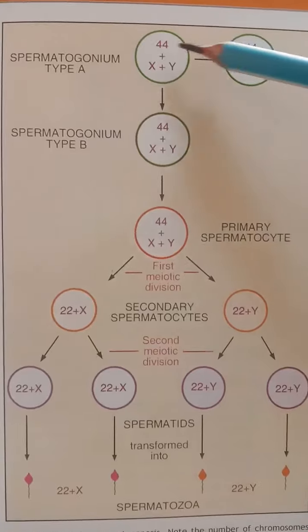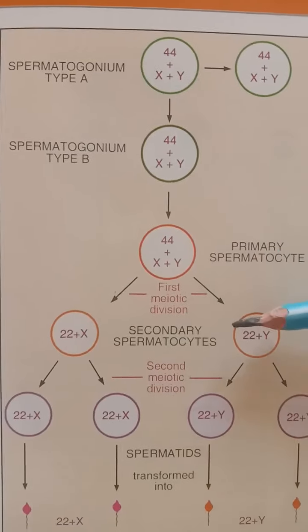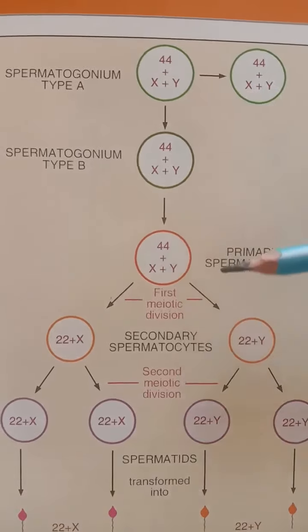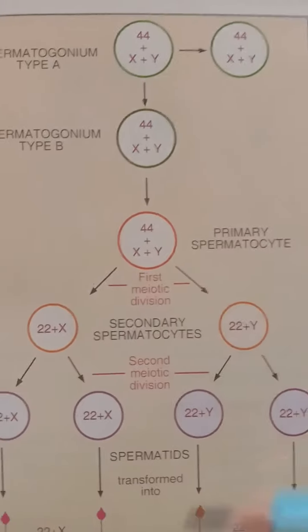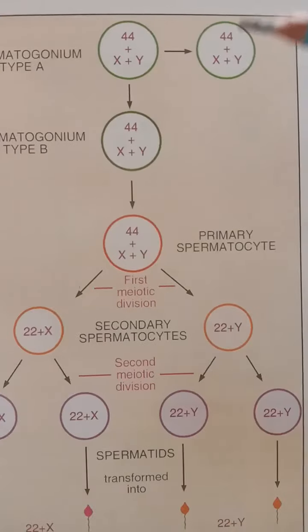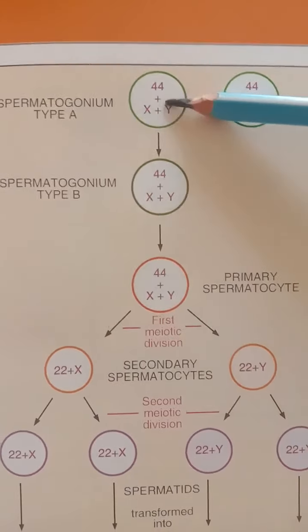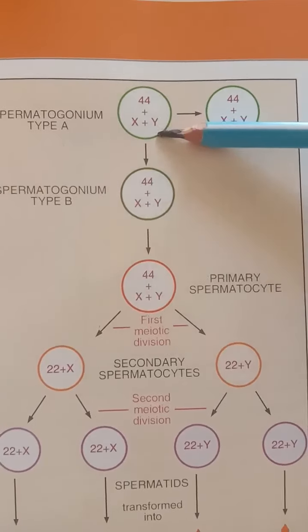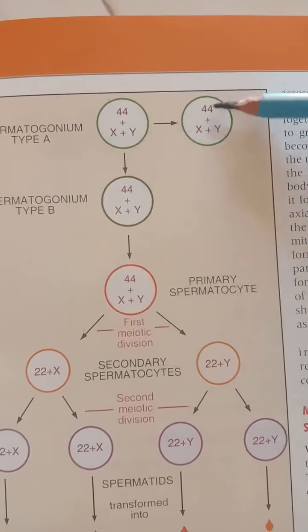Let's see how the process of spermatogenesis occurs in the testicles. Spermatogenesis takes place in the seminiferous tubule of the testicles from the primordial germ cell called the spermatogonia. The spermatogonia undergo a series of divisions to form the male germ cell called the spermatozoa. The spermatogonia is a type of germ cell which consists of 44 chromosomes plus X and Y — total 46 chromosomes — and divides mitotically to give rise to more spermatogonia type A.